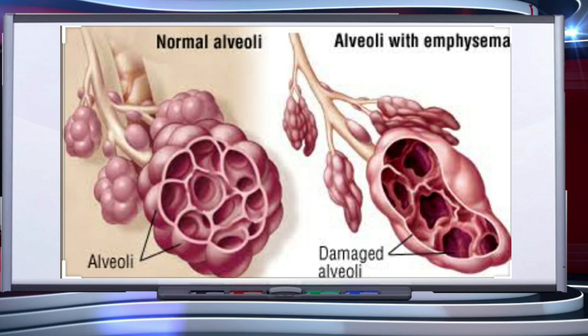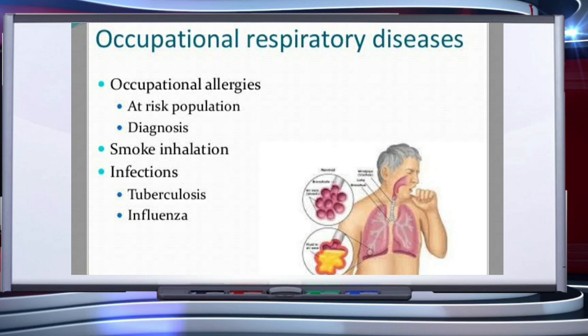The next disorder of the respiratory system is emphysema. It is a chronic disorder in which alveolar walls are damaged, due to which the respiratory surface is decreased. One of the major causes of this is cigarette smoking.